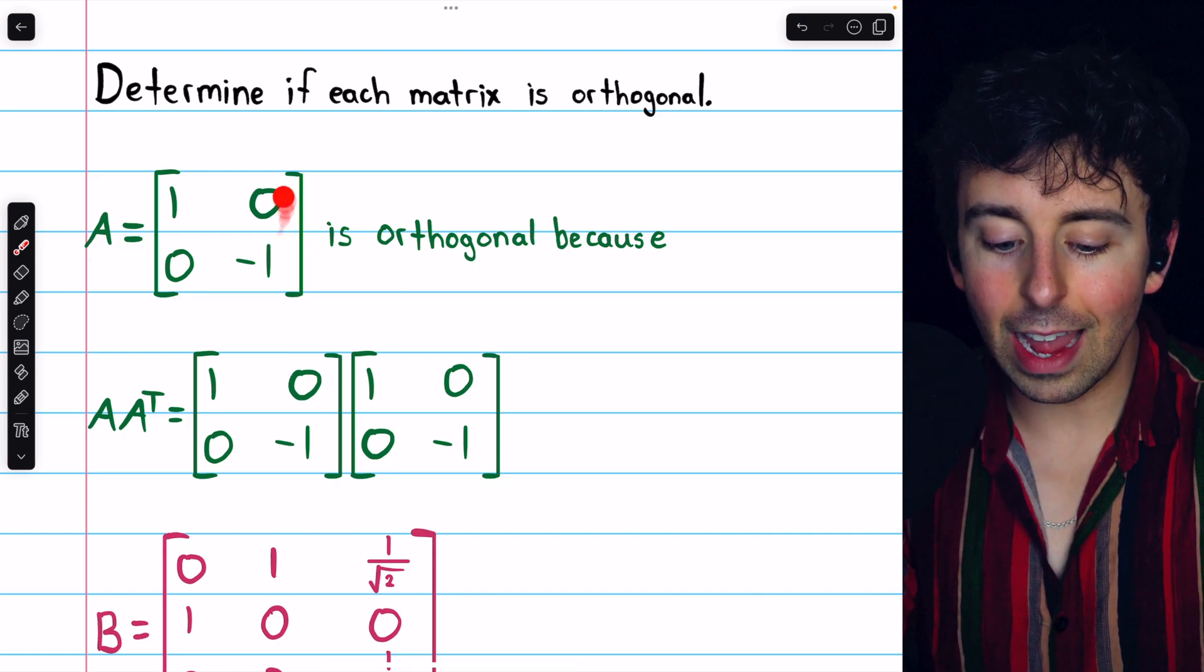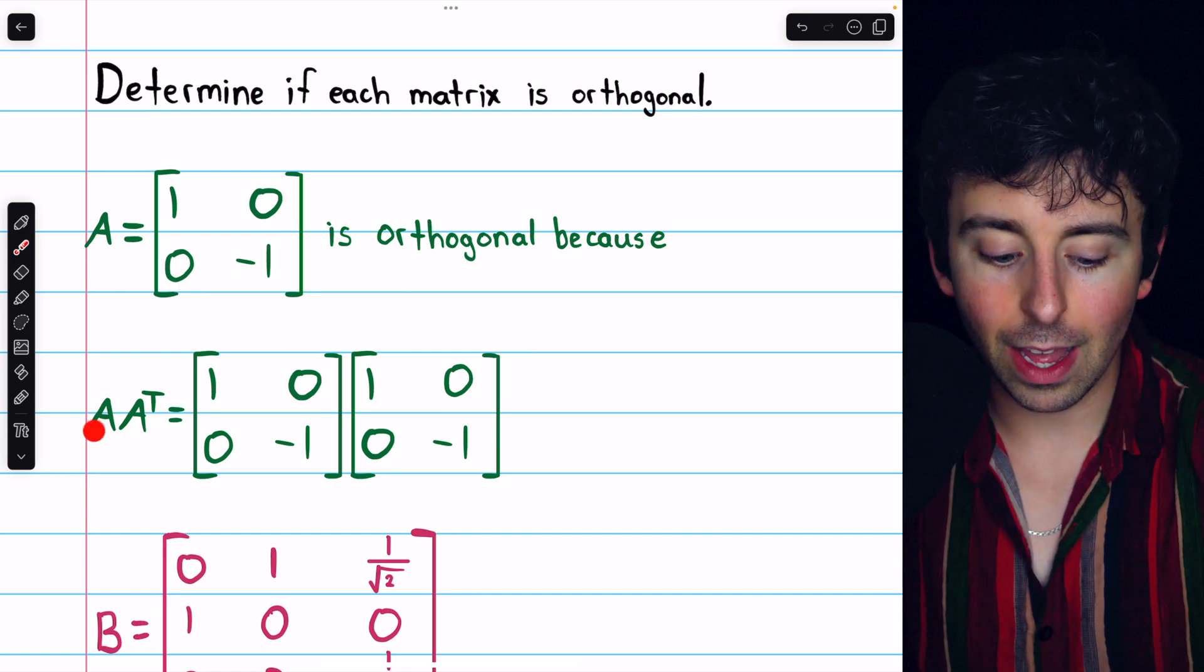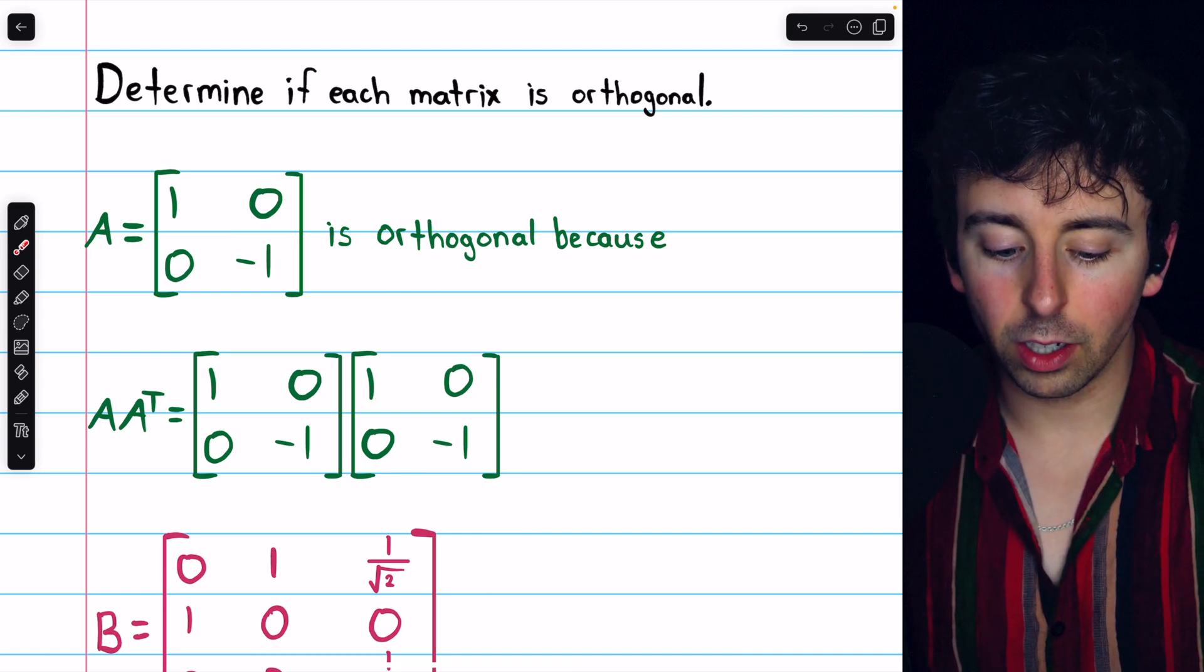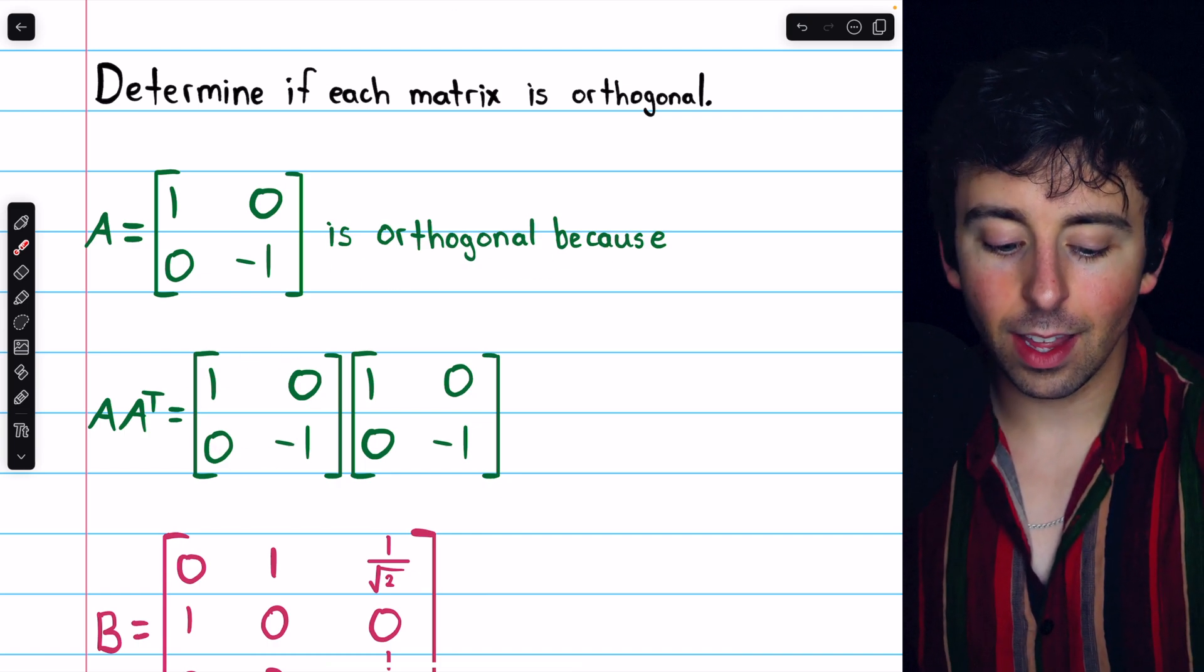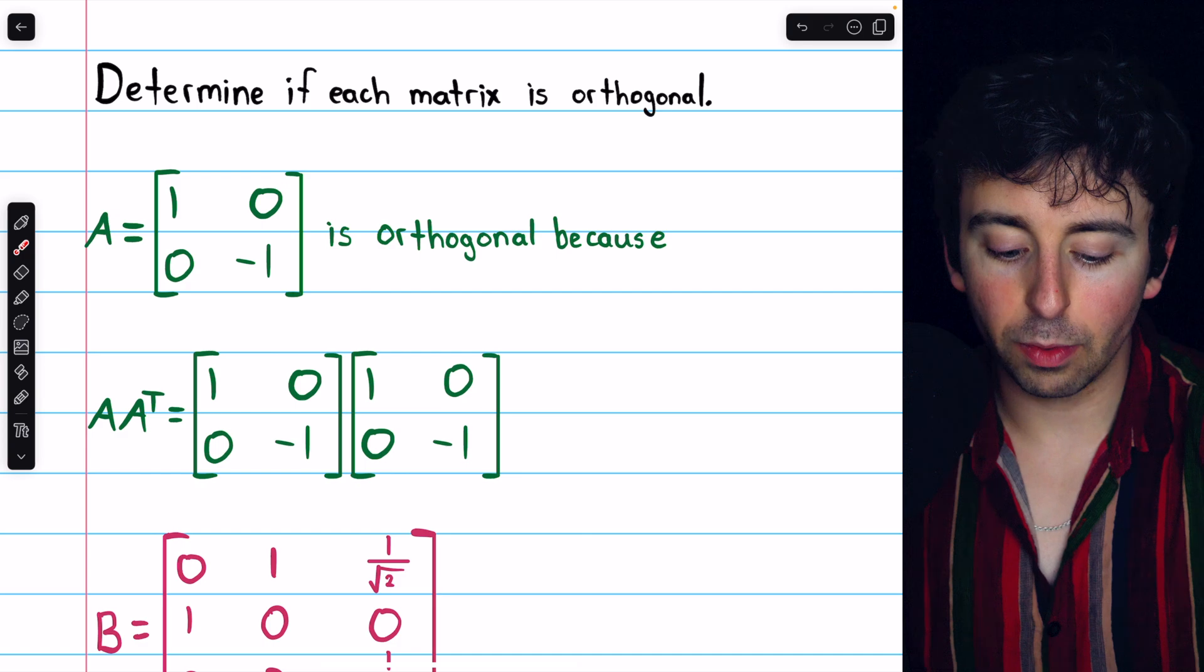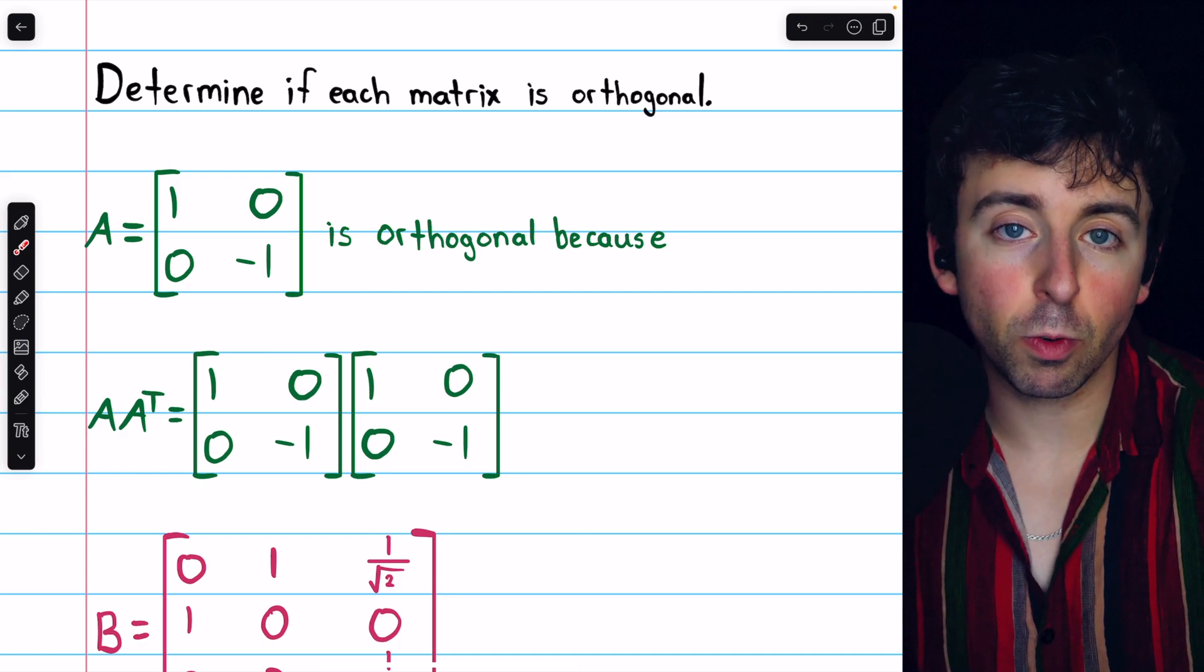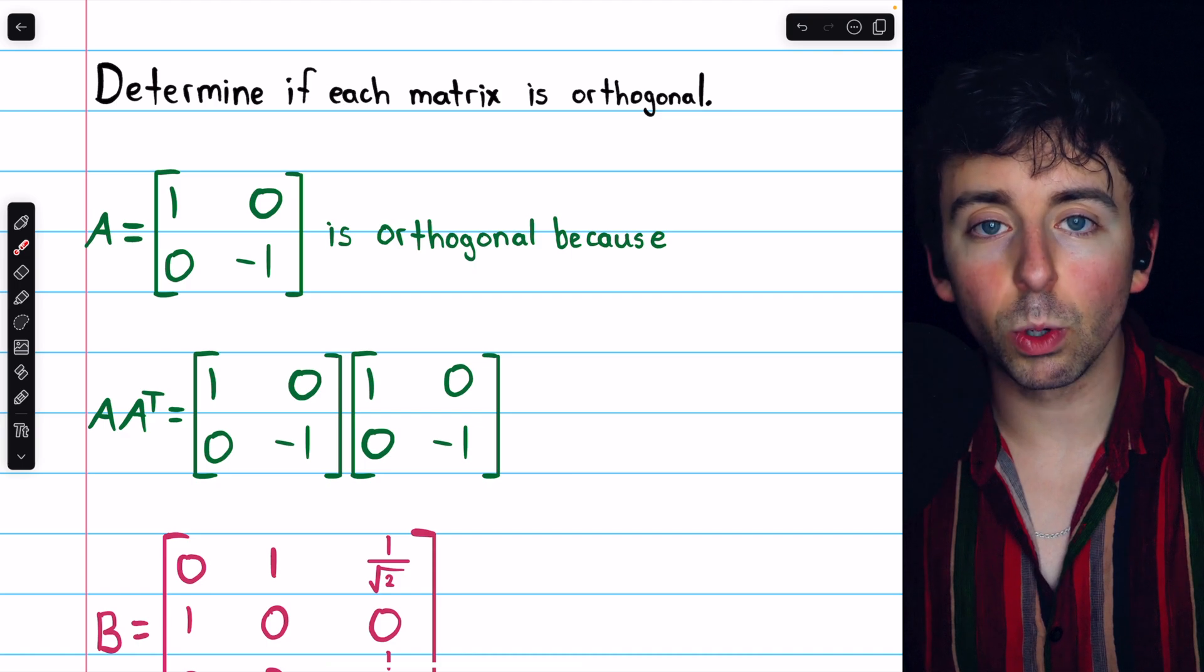To check if the matrix A is orthogonal, we have to multiply it by its transpose, and we find that it is orthogonal. Here's the matrix A, here's its transpose, which comes from swapping rows and columns. Of course, it happens to be a symmetric matrix, so it's actually equal to its transpose.